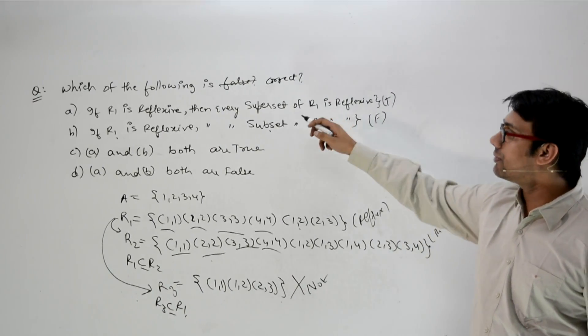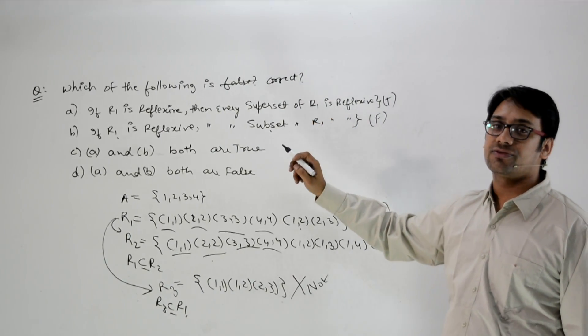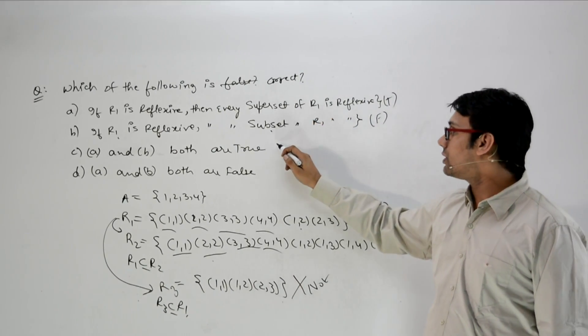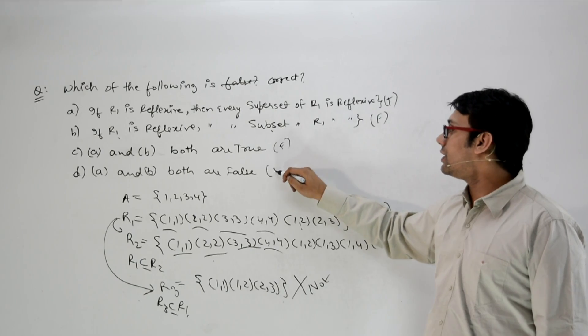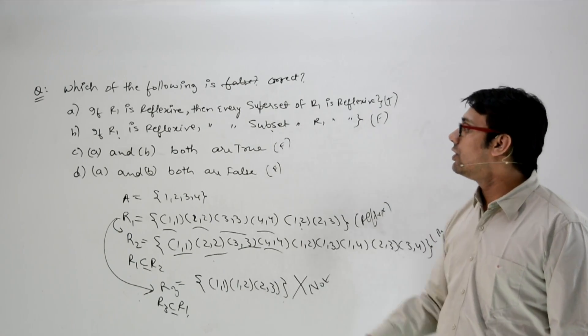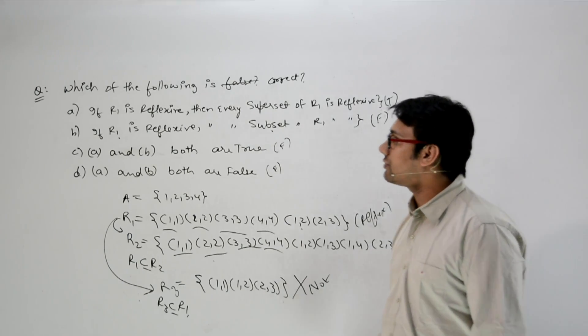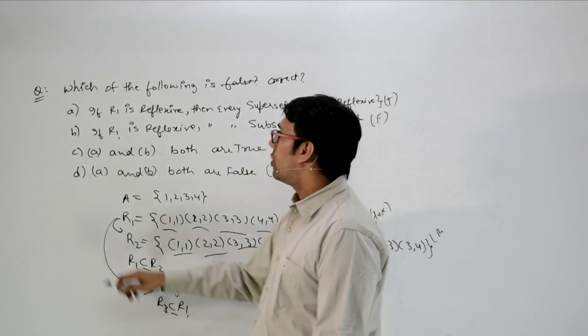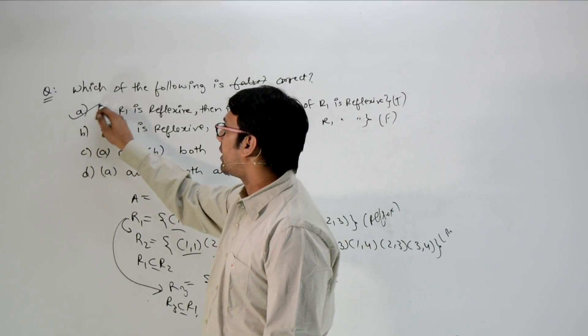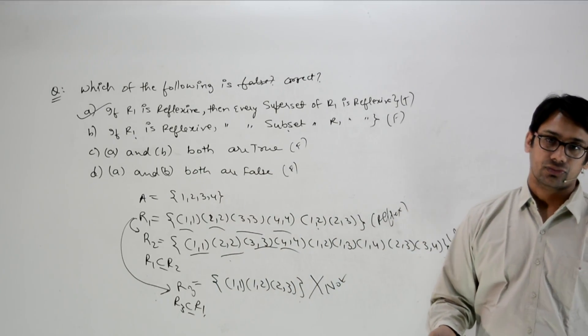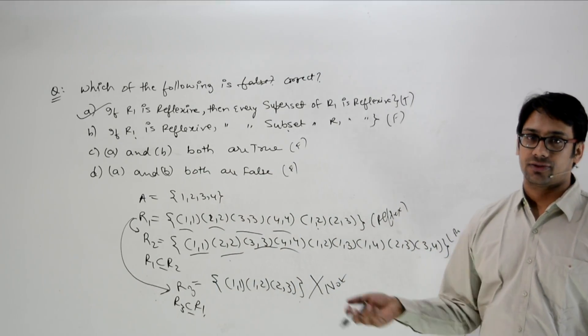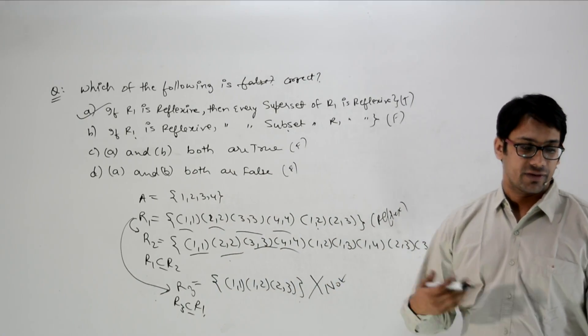So option A is true and option B is false. Therefore option C (both true) is false and option D (both false) is also false. Out of these four options, option A is true and everything else is false.